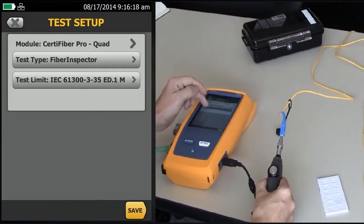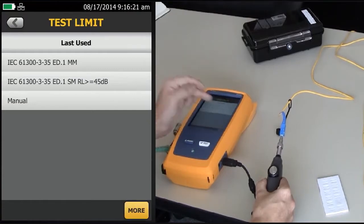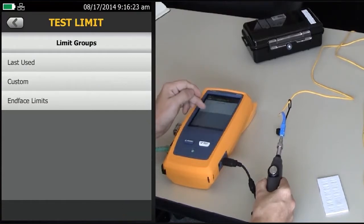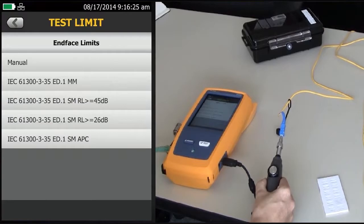So to change it, I tap Test Limit, More, and End Phase Limits. And you'll see that I've got four in here.